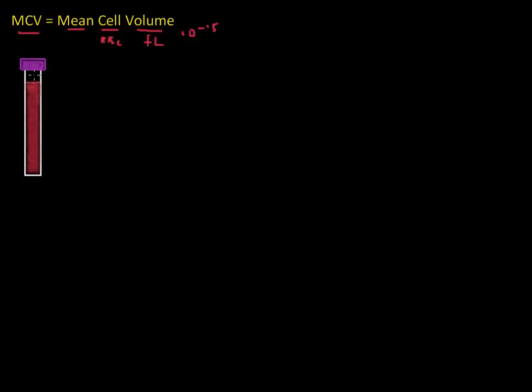The first one is that we know we have a certain volume of blood here, and in this volume there are a lot of red blood cells dispersed in this total blood solution. The challenge here is that if we just take the total volume and divide it by the number of red cells, then we would get an average volume.